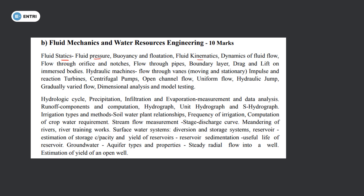Hydraulic machines: flow through vanes — stationary and moving — to get the impact of vanes and work done by force. Impulse and reaction turbines — turbine classifications including impulse turbine and reaction turbine. Centrifugal pump. Then open channel flow: uniform flow, hydraulic jump, gradually varied flow. Dimensional analysis and model testing. This covers fluid mechanics.